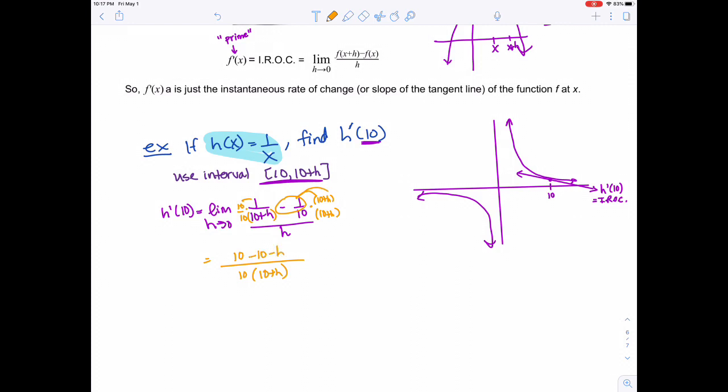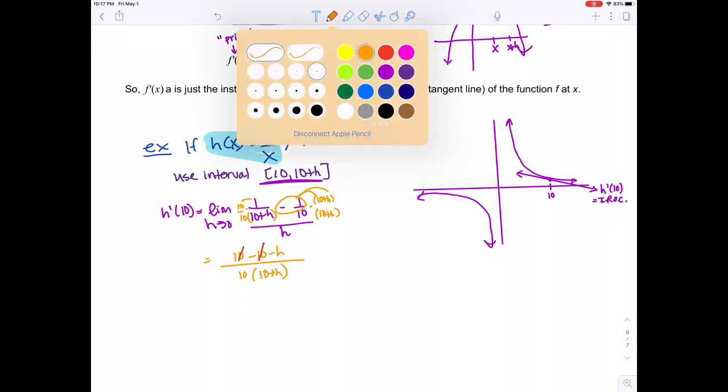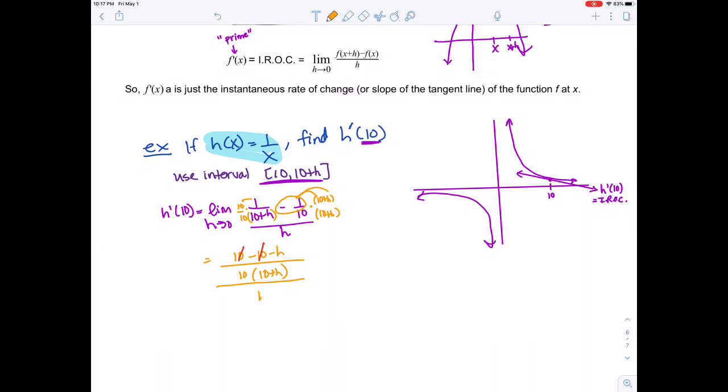Distributing gives me 10. I distribute this negative 1 and get negative 10 minus h. Simplifying, the 10s cancel out. Remember, this whole thing is divided by h - I forgot that piece. Now simplifying, my numerator is negative h over 10 times 10 plus h, all divided by h.